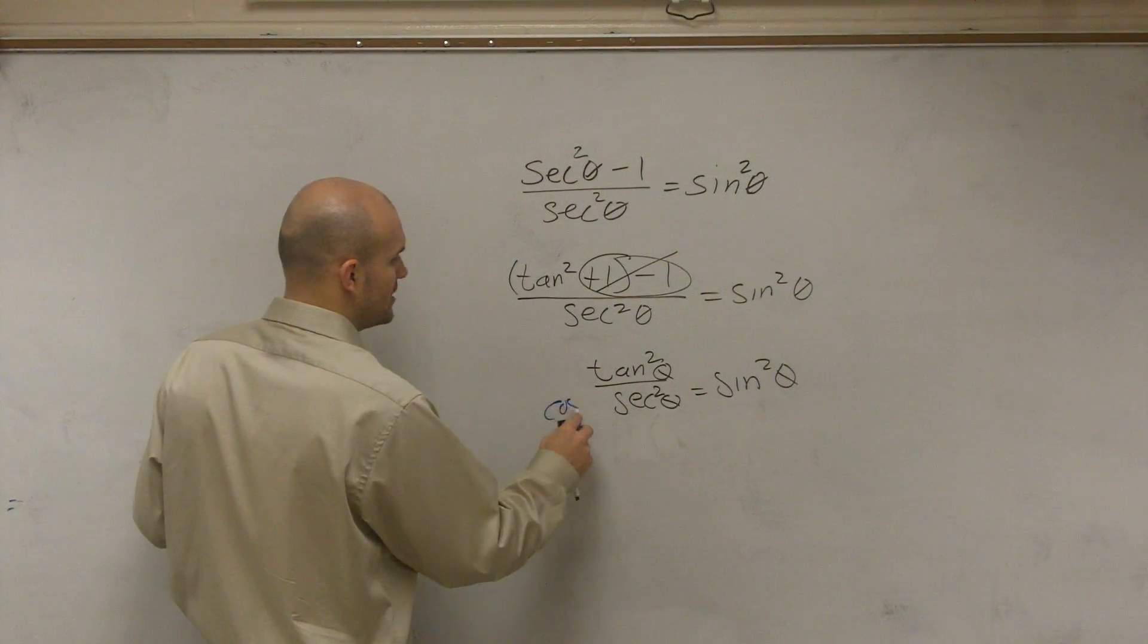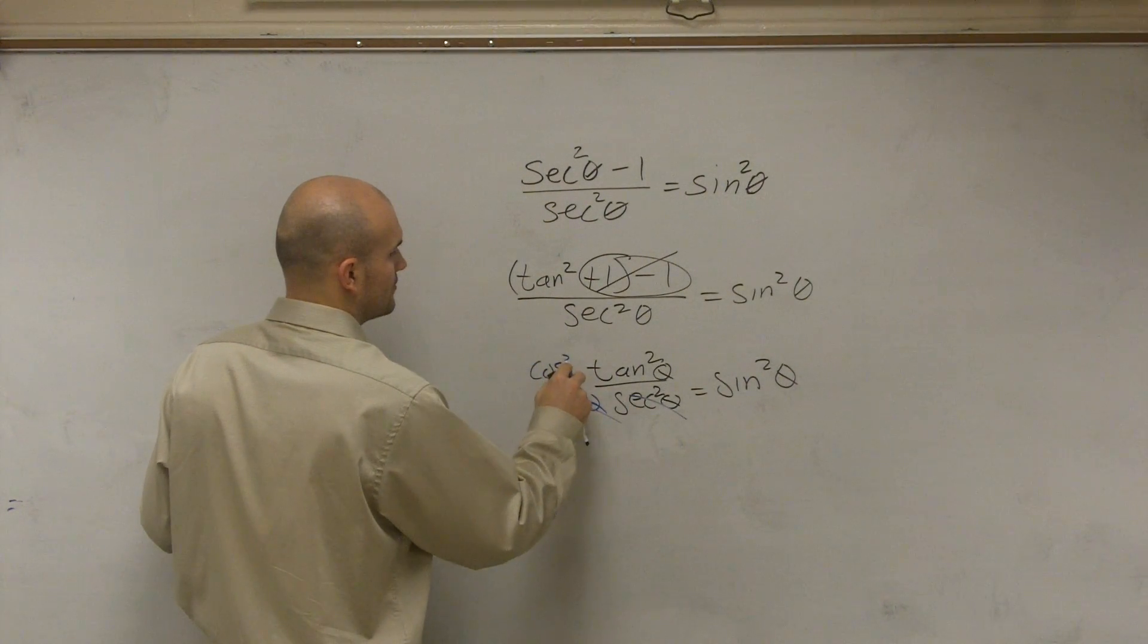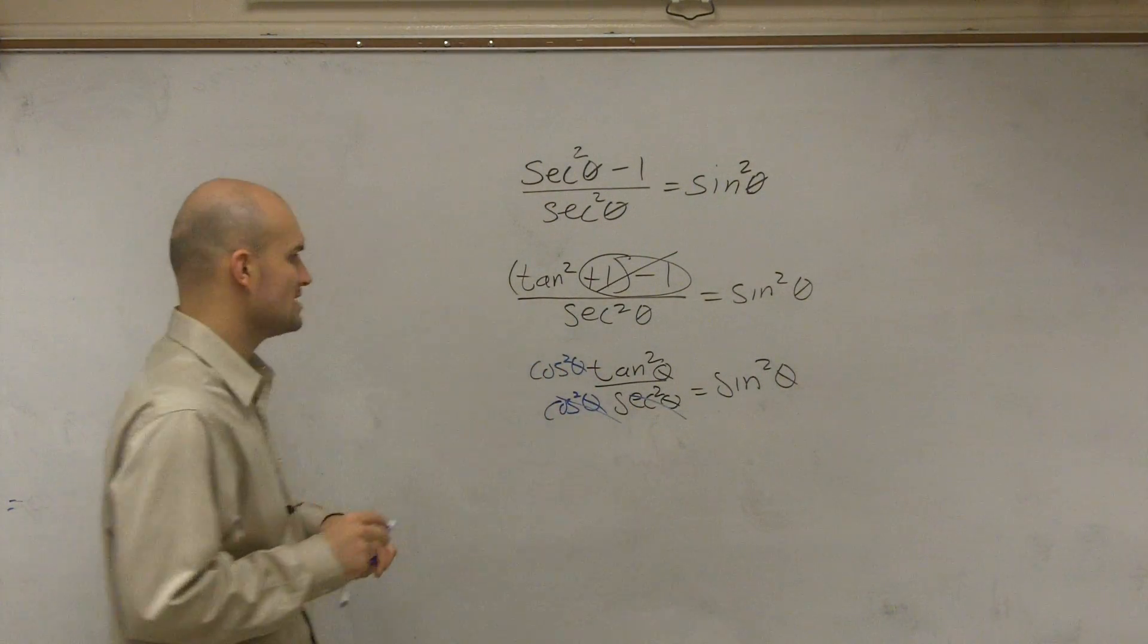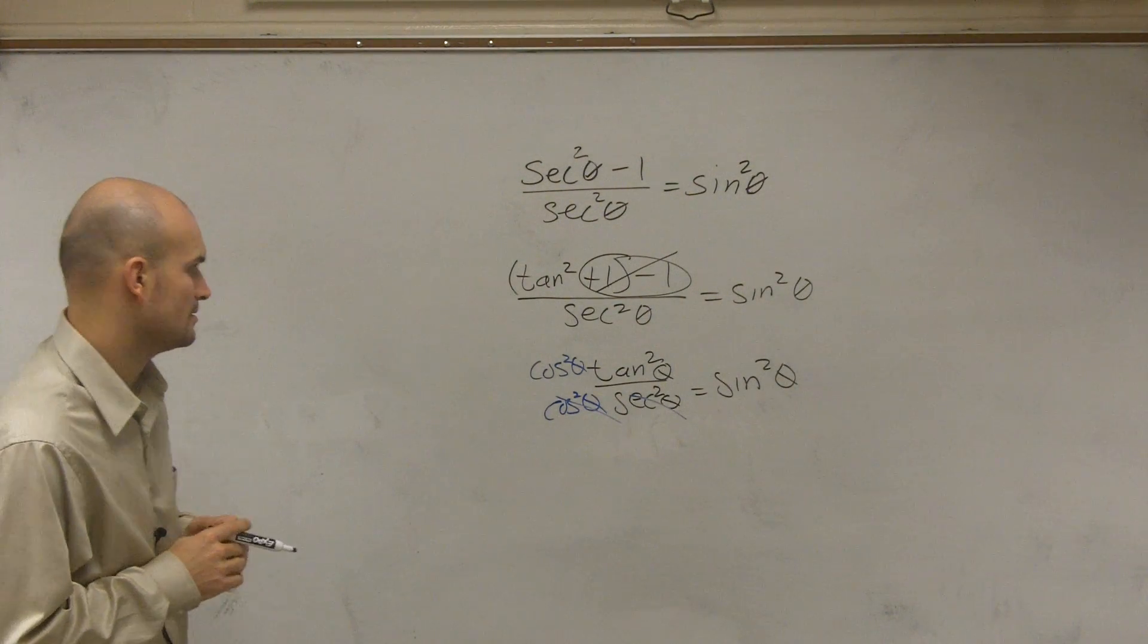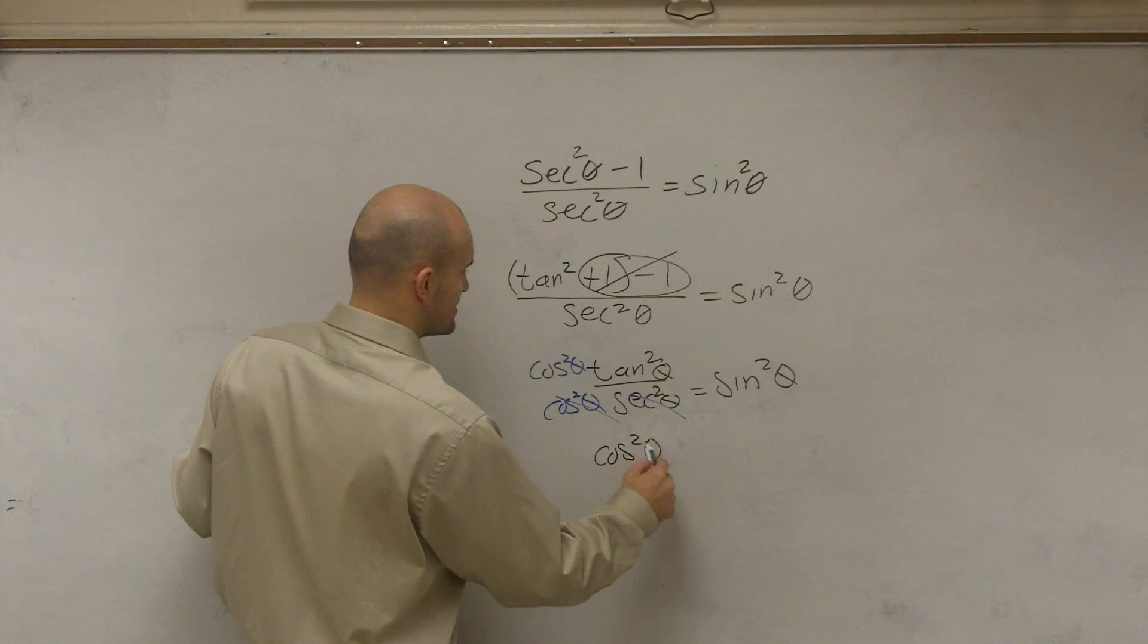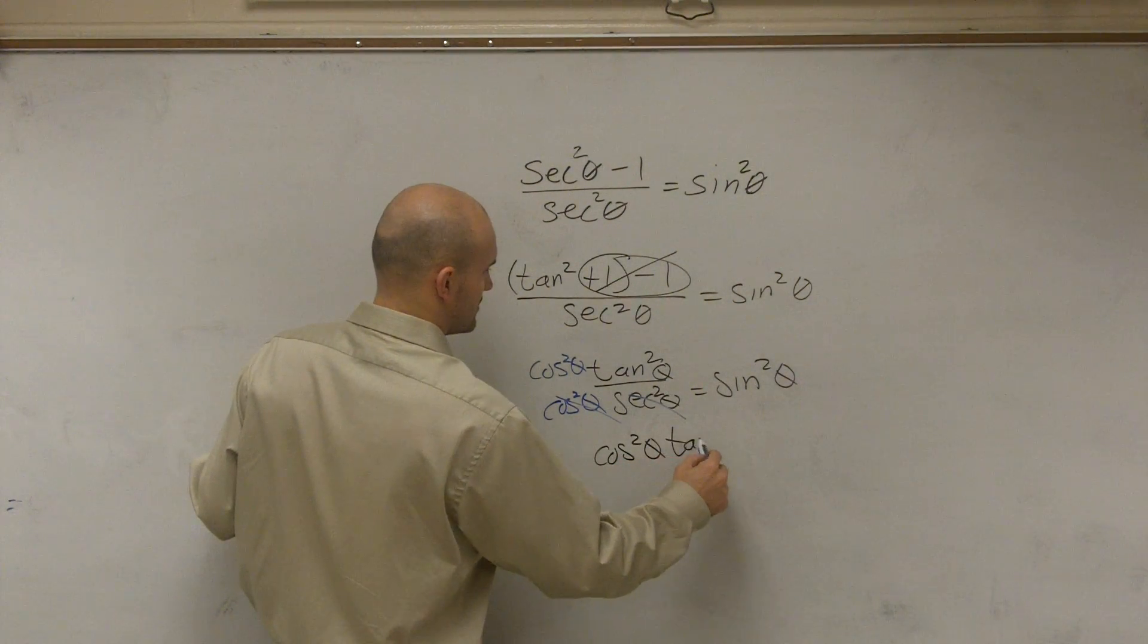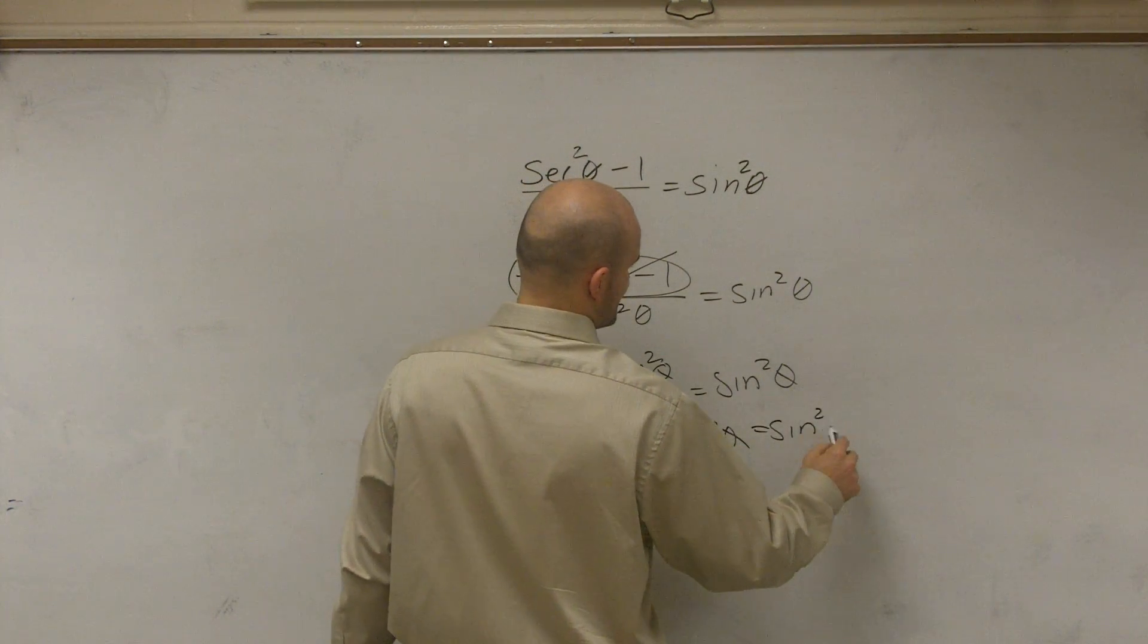So if I multiply by cosine squared, now that's going to multiply to 1. Cosine squared over this is going to leave me with cosine squared of theta times tangent squared of theta equals sine squared of theta.